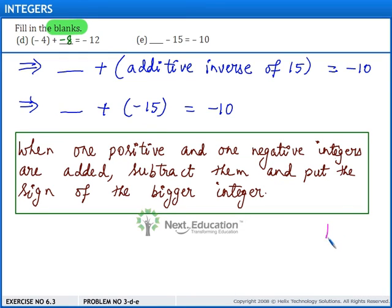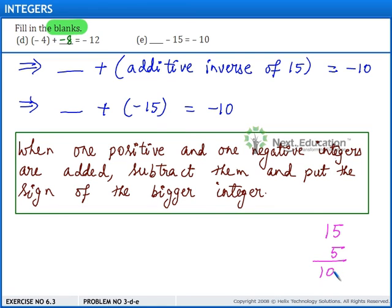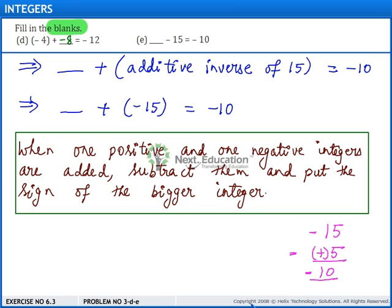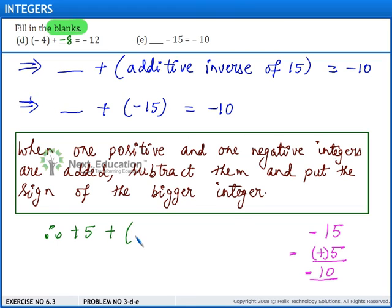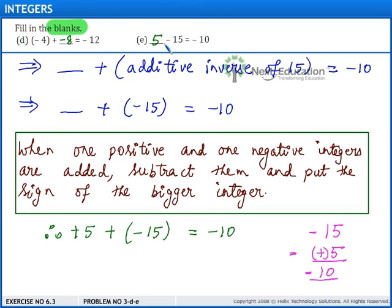Now, we need to subtract an integer smaller than 15 from 15 so that the result will be 10. Here, the sign of 15 is negative and we place the sign of 5 as positive, so that the result will be minus 10. Therefore, plus 5 plus minus 15 is equal to minus 10. So, let us fill this blank with 5. 5 minus 15 is equal to minus 10.